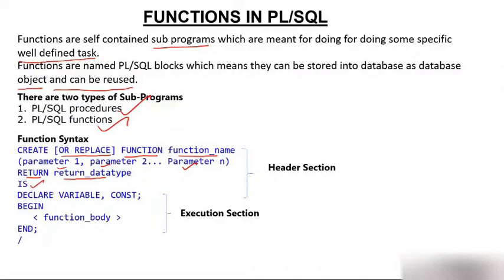Then you write IS. After IS, if you want to declare any variables or constants, you declare them there. Then comes BEGIN, then the function body, and finally END. The part from CREATE to IS is called the header section, and the part from BEGIN to END is called the execution section.